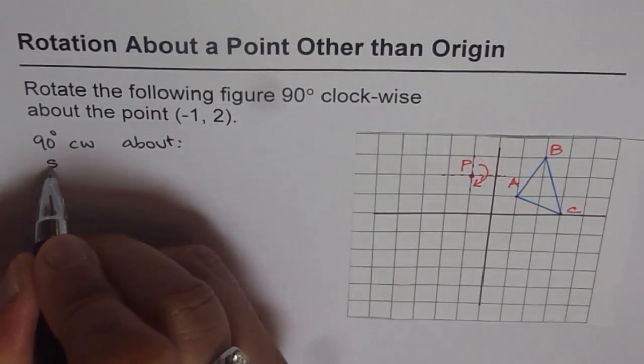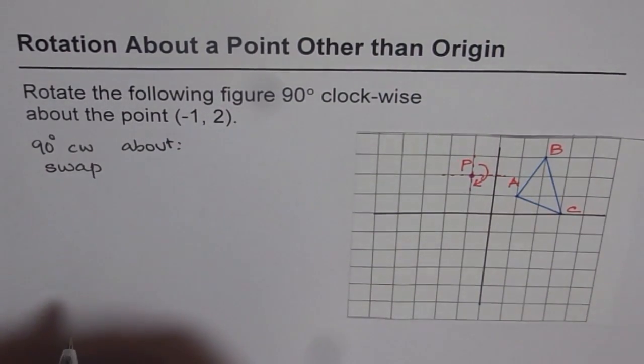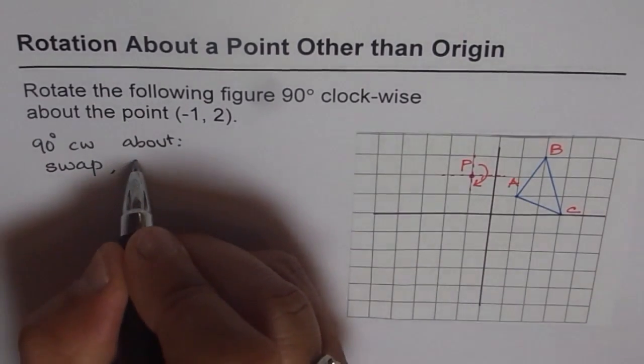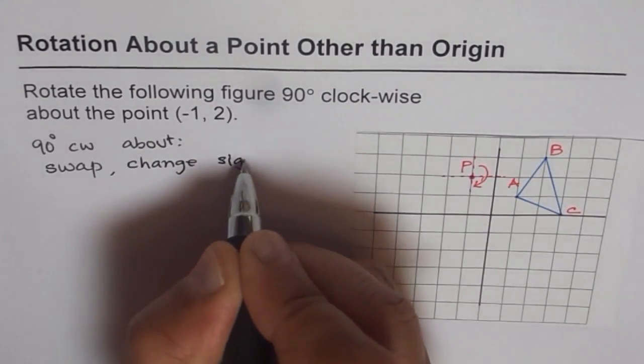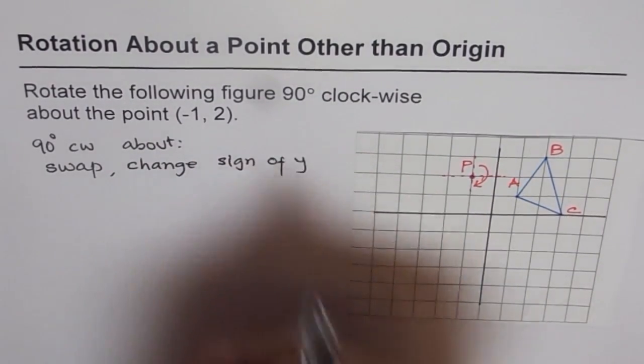They swap, right? So you swap, interchange x and y and you change sign of y, right? And change sign of y, correct?